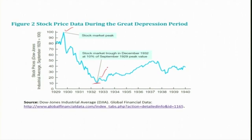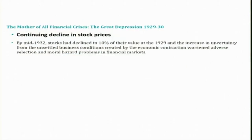By mid-1932, stocks had declined to 10 percentage of their peak value. There was increased uncertainty from unsettled business conditions created by economic contraction, which worsened the adverse selection and moral hazard problems in financial markets.